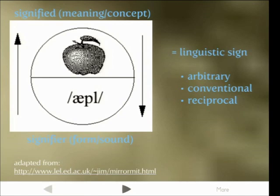As I already showed with the pterodactyl/'ron' example and the 'apple'/'pomme'/'Apfel'/'alma' example — if it's arbitrary, if it's random, you've got to learn it. If you're a kid, you've also got to agree on it within the speech community. All speakers of English must agree that it's 'apple' and not something else.